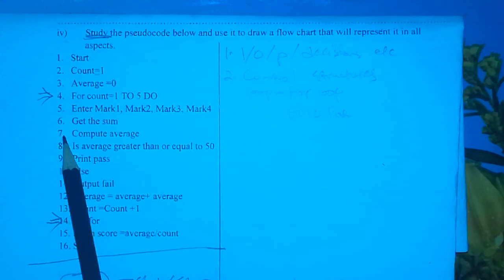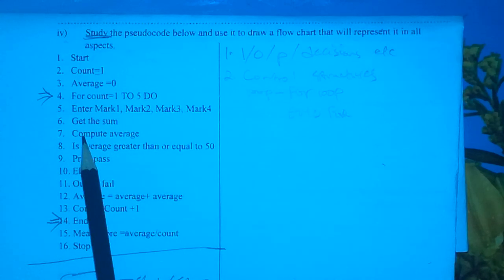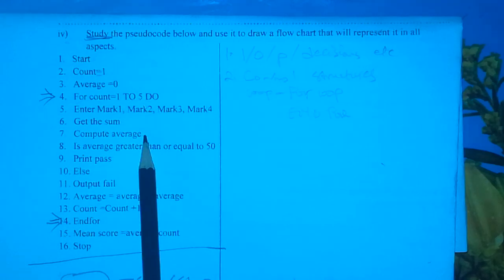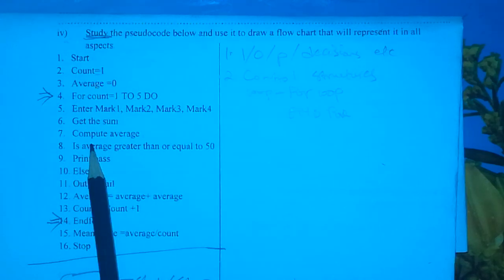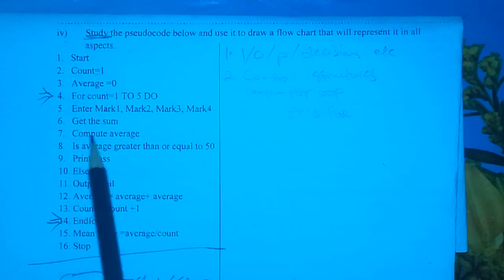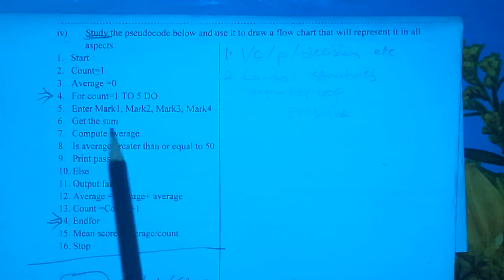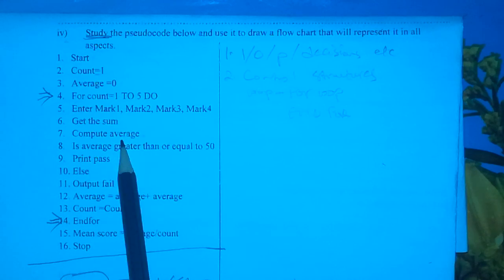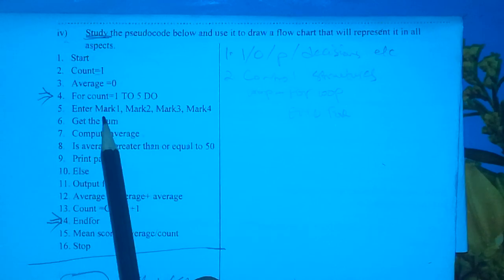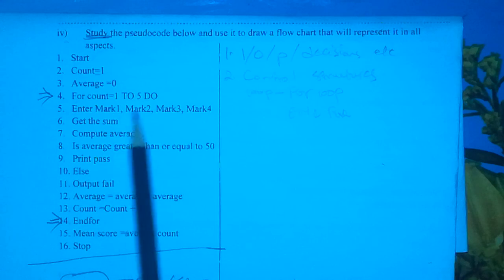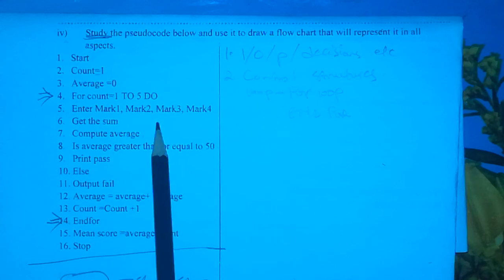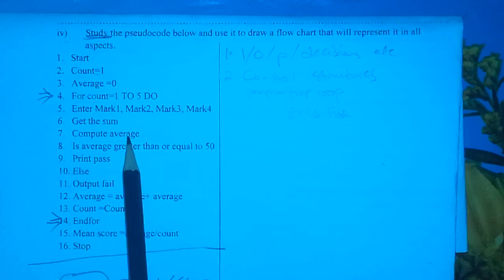Line number seven says 'Compute Average.' To compute is to calculate, so line seven is also a process. The candidate is expected to know how to get an average, which is the sum divided by the number of terms that were added.